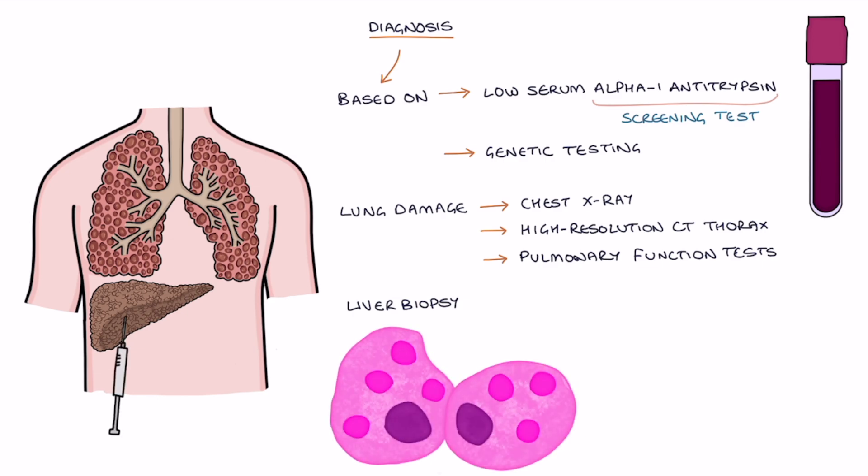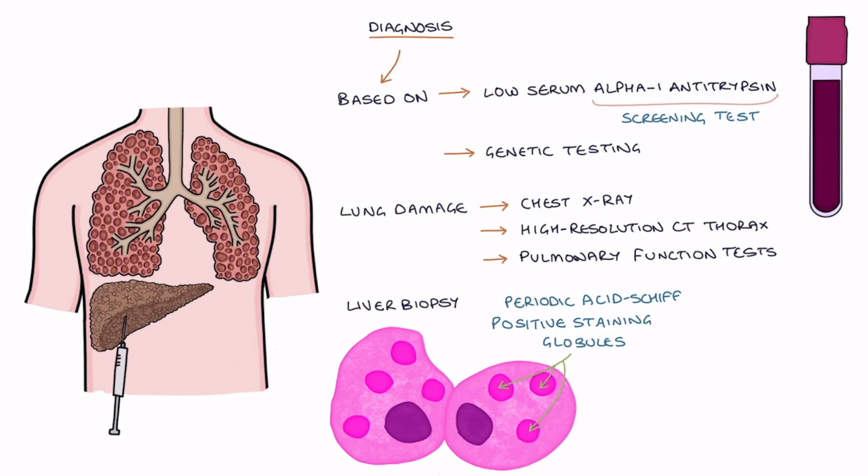A liver biopsy shows periodic acid shift positive staining globules inside the hepatocytes, which are resistant to diastase treatment. These acid shift positive staining globules represent a build-up of the mutant proteins inside the liver cells.